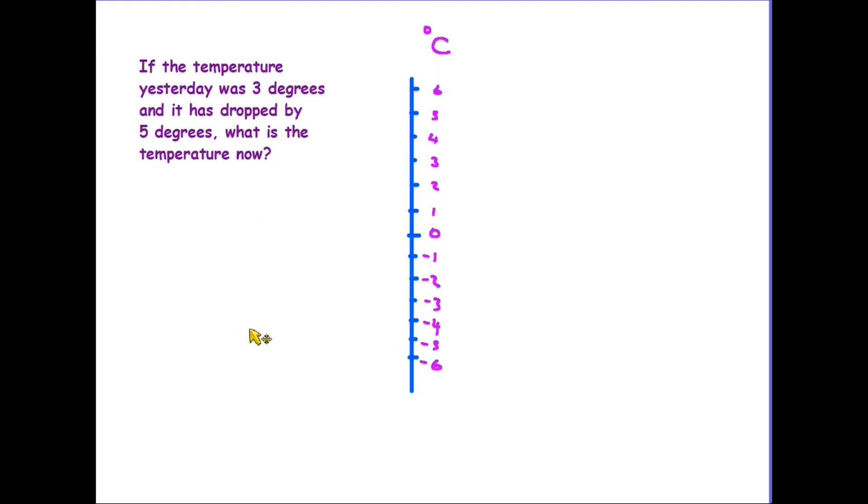So a typical question here might be: if the temperature yesterday was three degrees and it has dropped by five degrees, what is the temperature now? So we do this in the same way as we did on the previous page. We're starting there at three degrees, we know that it's dropped by five, so that's one, two, three, four, five. So there are five stages it's dropped down, so the temperature is now minus two degrees.